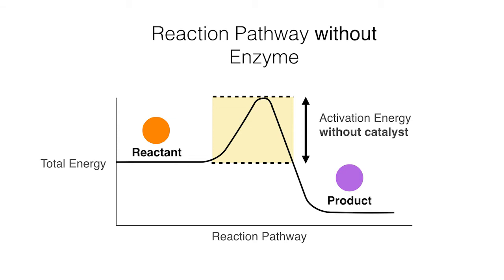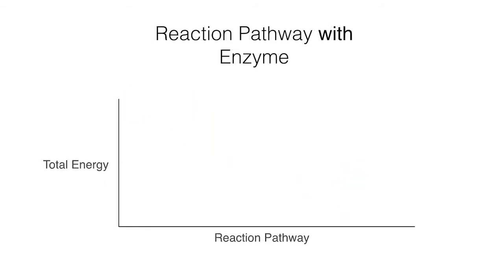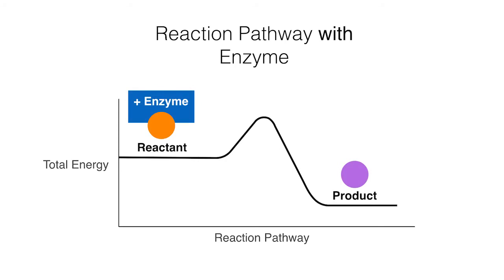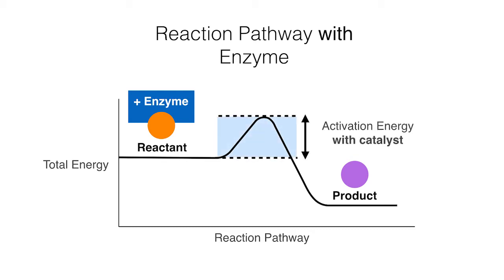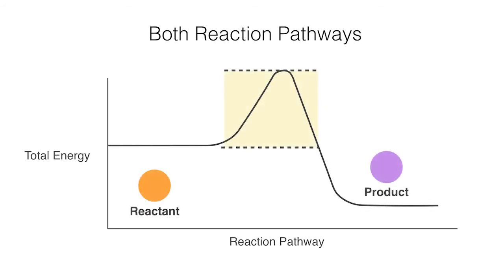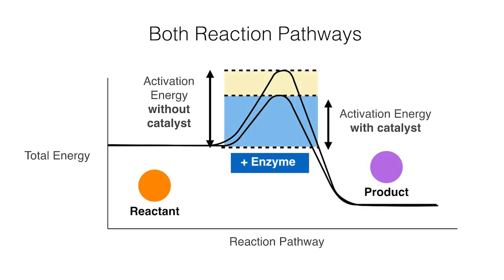So let's now look at the reaction pathway with an enzyme. At first glance you can already see that this reaction pathway is different. With the addition of an enzyme, the hill part of the graph is lower, meaning that the activation energy is lower. This means that less energy is needed to turn a reactant into a product and a lot less energy is needed to break food down into useful energy. If we directly compare both reaction pathways, we can visually see that the activation energy required for a reaction is lower when an enzyme is used.